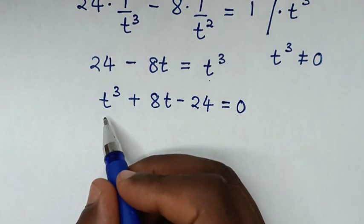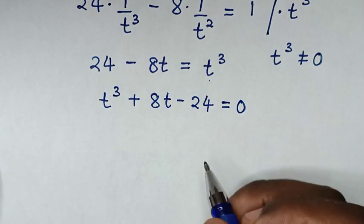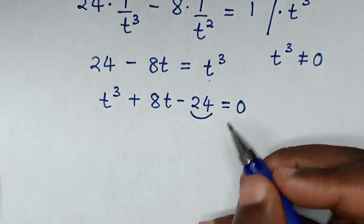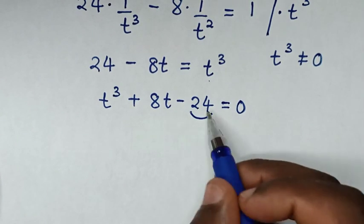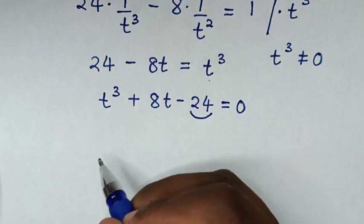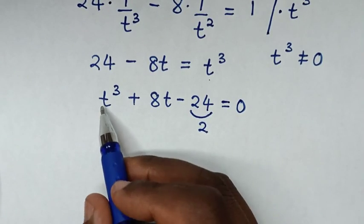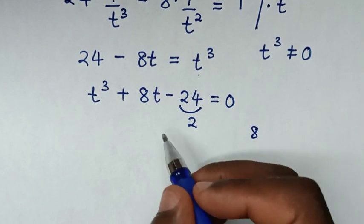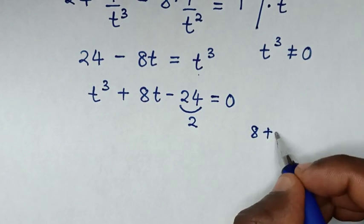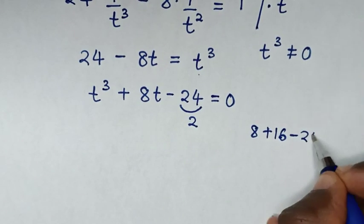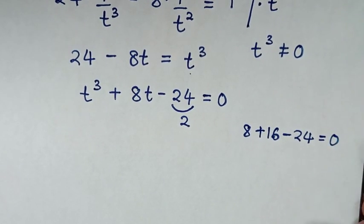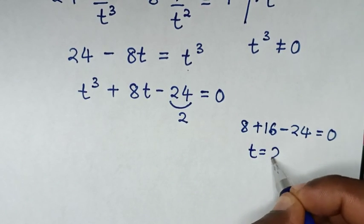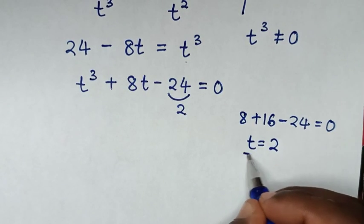To solve this cubic equation, we test factors of 24, starting with 1. When we substitute 1 it does not equal 0. When we substitute t = 2: 2³ is 8, plus 2 times 8 is 16, minus 24 equals 0. So t = 2 gives a valid solution.